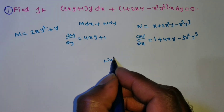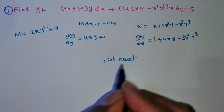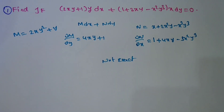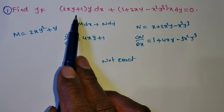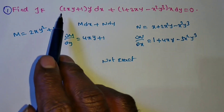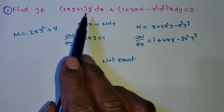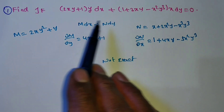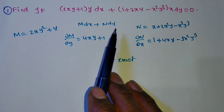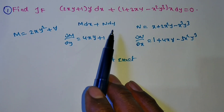∂M/∂y is not equal to ∂N/∂x, so this is non-exact. Non-exact means which method you have to use — we have 5 or 6 methods. First method: inspection method. Is it possible to rearrange? Divide with something, can you separate the dx term and dy term by rearranging? No, so inspection method is not possible.